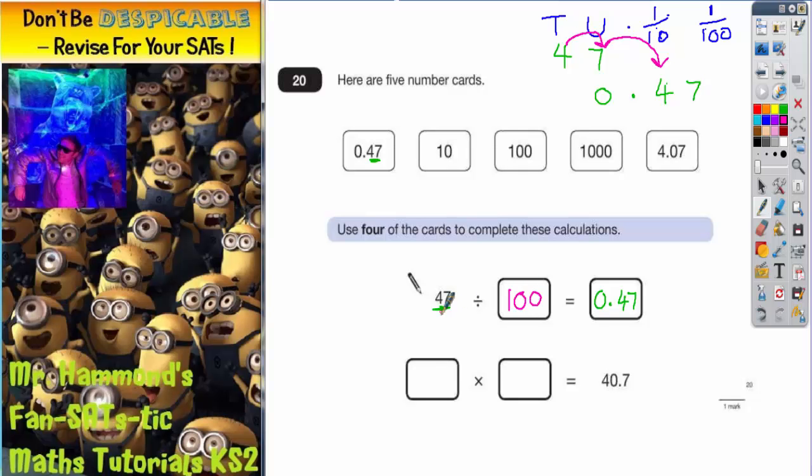Just check my answer: 47 divided by 100 is 0.47. That's correct. So I can cross off 0.47 and I can cross off 100.